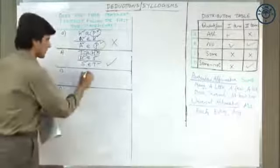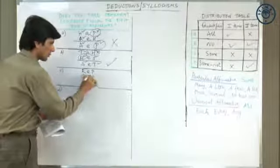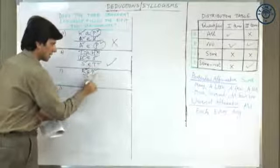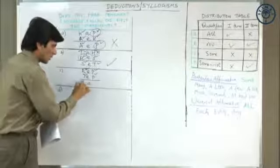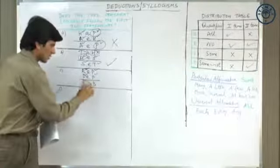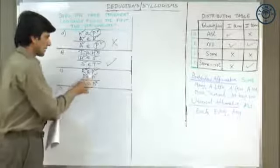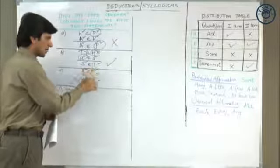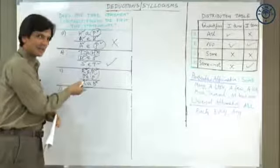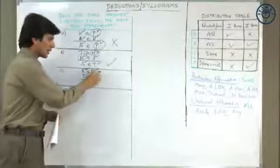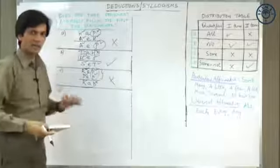Part C: no ruby is a pearl — both distributed. No diamond is a pearl — all distributed. The conclusion is rubies are diamonds, meaning all rubies are diamonds. The middle term P is distributed in both premises. However, both premises are negative, and when both premises are negative we cannot draw any conclusion. Hence this is not valid at all. Part C is ruled out.